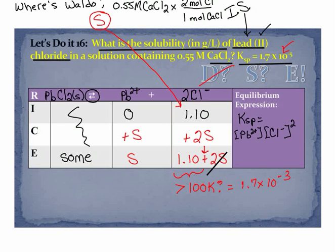Now I'm going to substitute and solve my equation. I have 1.7 times 10⁻⁵. Instead of lead ion, I'm going to put s. And instead of the chloride, I would normally put 1.1 plus 2s. But remember, we've simplified. That helps us avoid the quadratic equation.